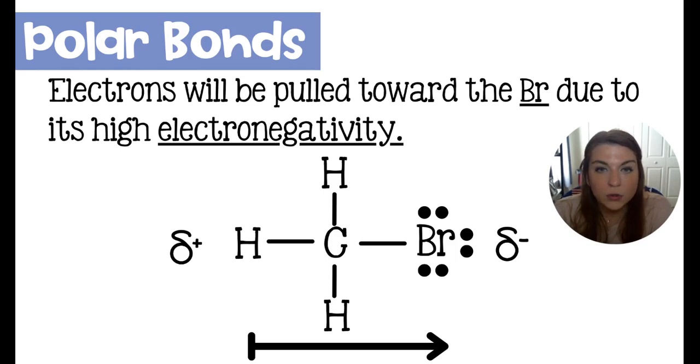We draw this arrow to indicate the dipole moment or rather just the direction of where the electrons are going. The flat tail end of the arrow indicates the positive region. And then the pointed head of the arrow indicates the negative region.